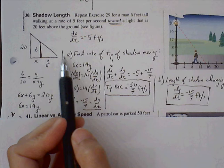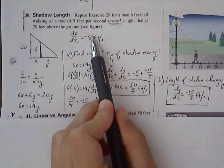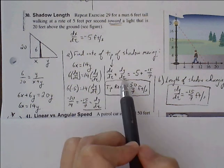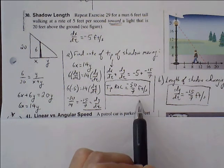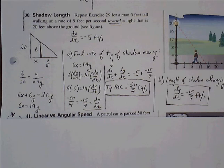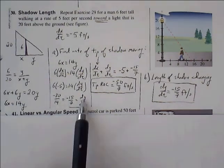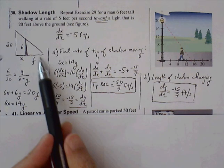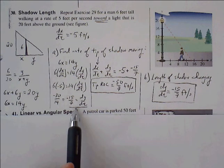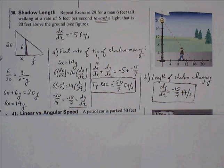The tip of the shadow is influenced by both the rate of change of x and y, so we add the two rates: dx/dt + dy/dt = −5 + (−15/7) = −50/7 feet per second. That is the rate of change of the tip of the shadow. For part b, the length of the shadow is changing simply at the rate given by dy/dt, which is −15/7 feet per second.